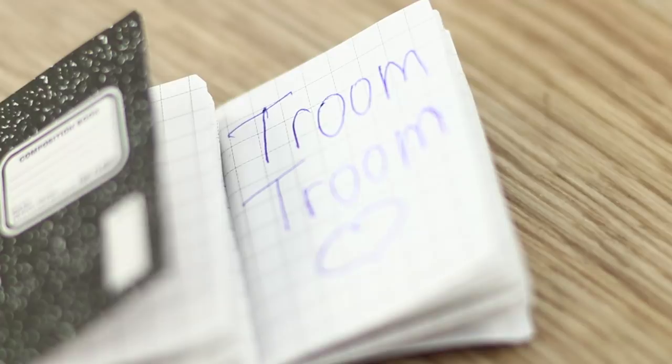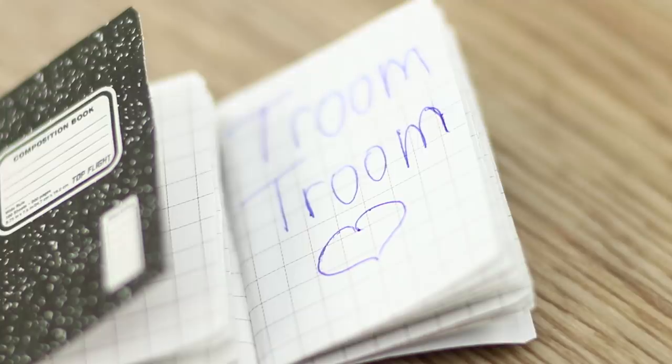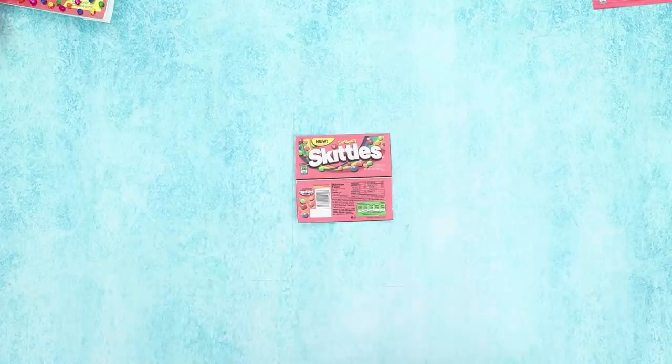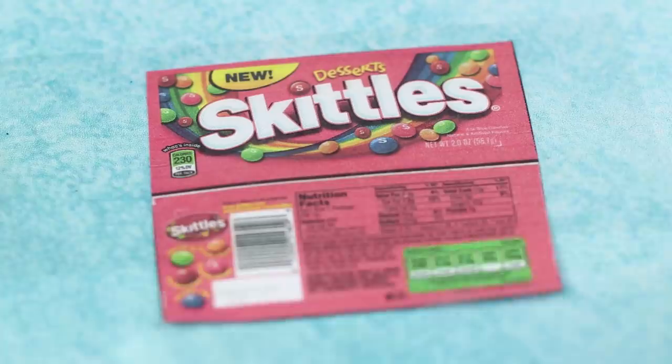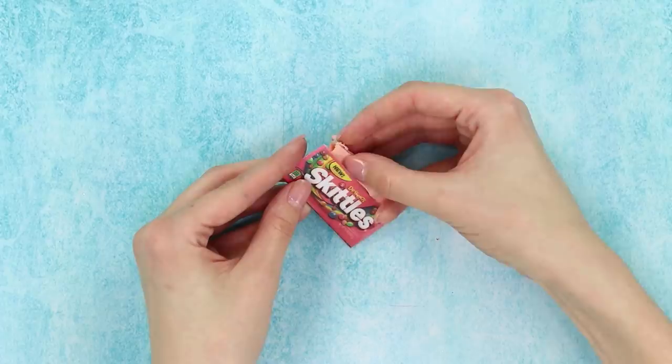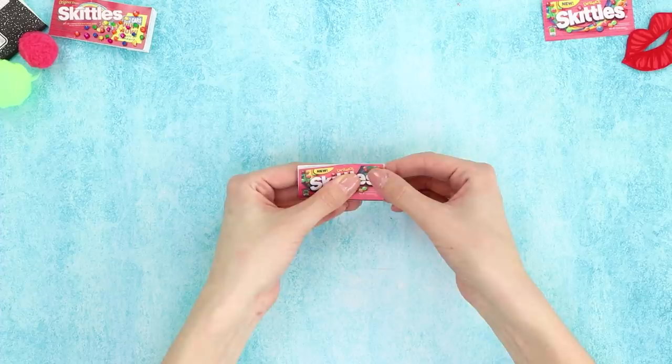And for this craft, you need a printed Skittles label and a zipper. Strengthen the paper label with wide tape. Smooth it out to get rid of bubbles. Fold it in half. Glue the side parts with tape. Shorten the zipper to the size of the label. Attach it with hot glue.